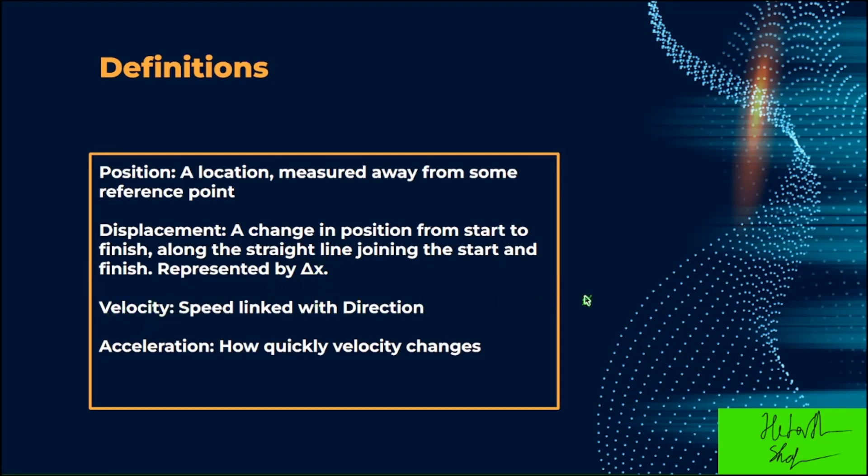Then we have velocity, which is speed linked with direction. For example, 3 meters per second north. So 3 meters per second is the speed part, and then north is the direction.